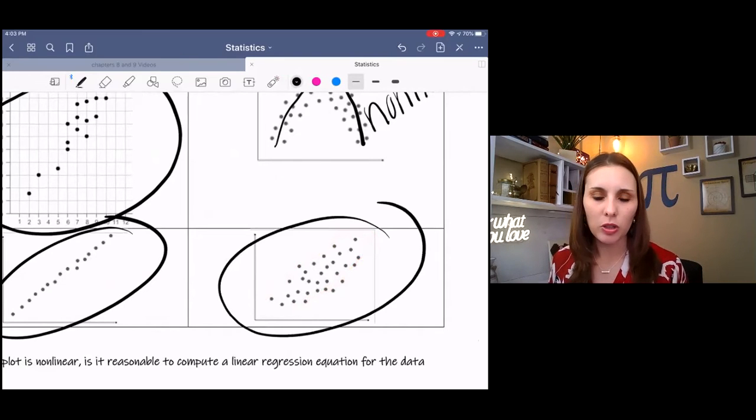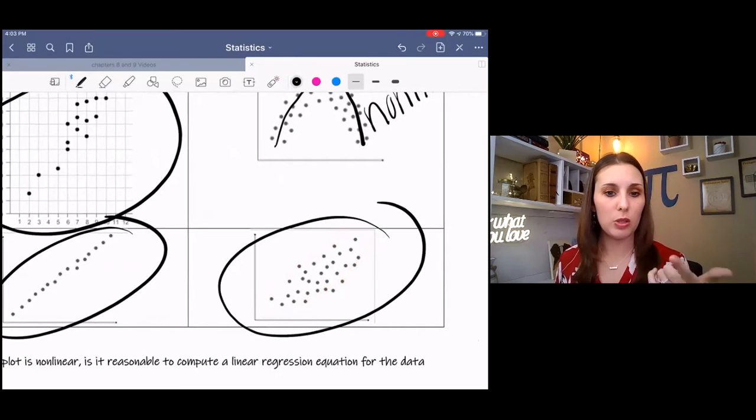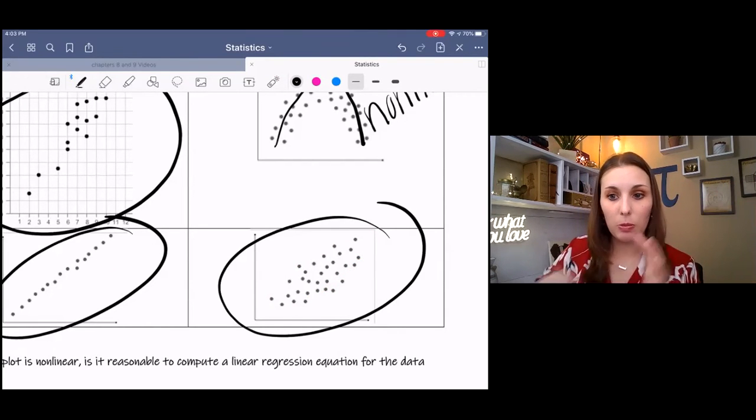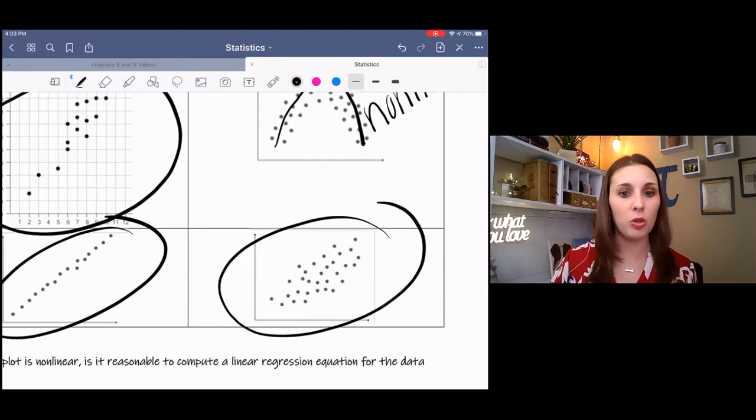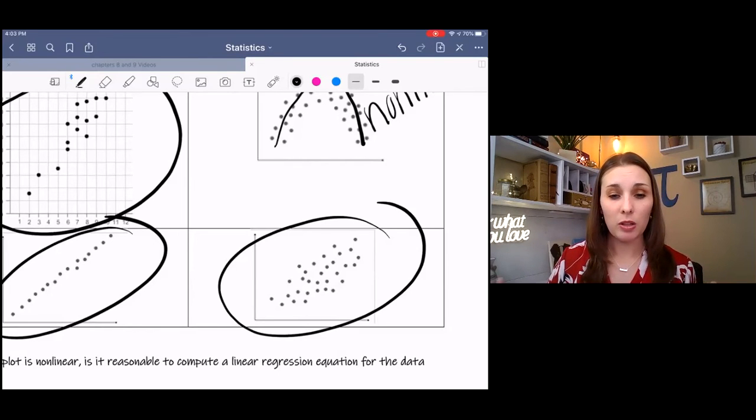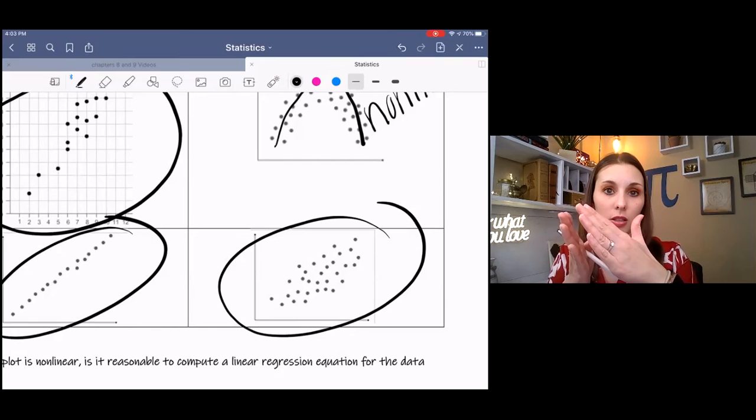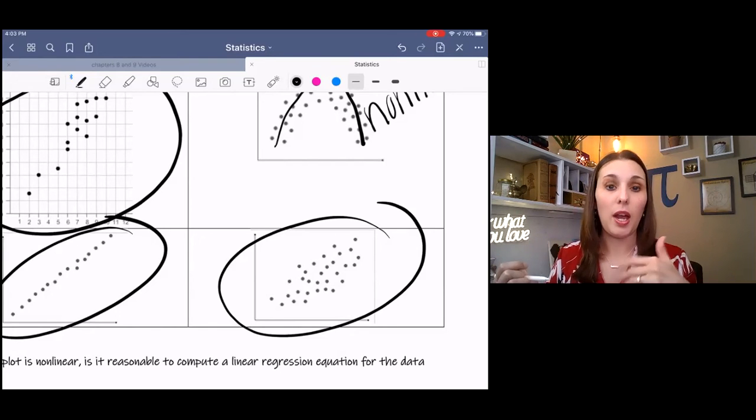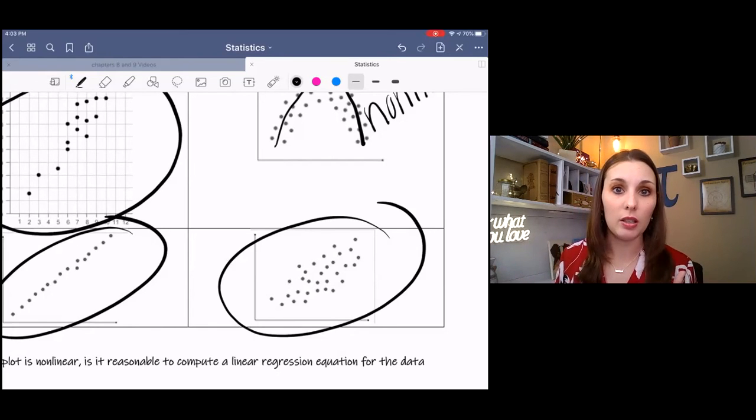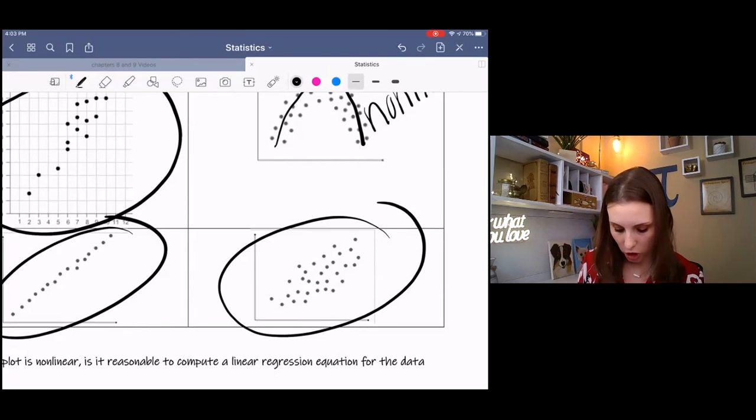So your data may not look exactly like a line. But as long as it follows a linear trend, whether it's going up or going down, all of these were positive slopes, but it could be going down also. As long as it has a linear pattern, linear behavior, linear trend, even though it may not look exactly like a line, if the majority of your data points are all going in the same direction, then you can proceed into writing a linear regression equation.